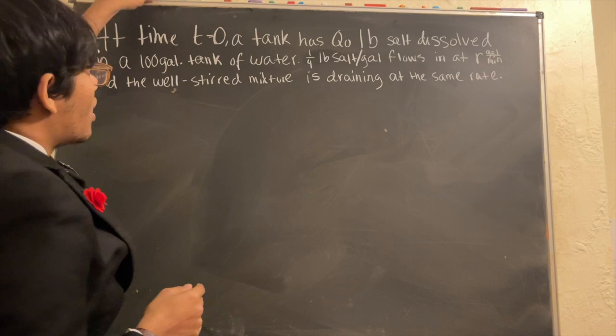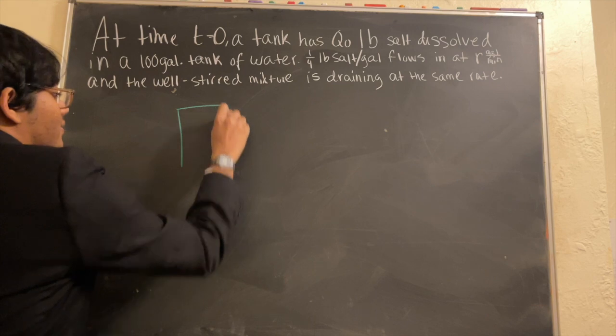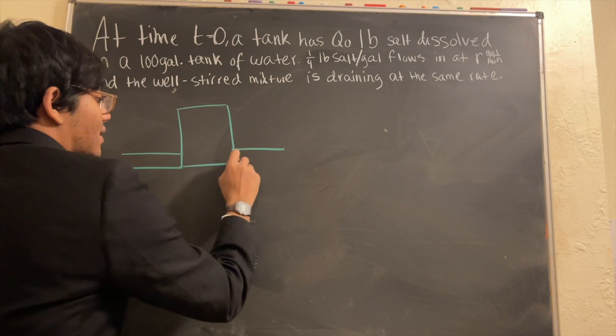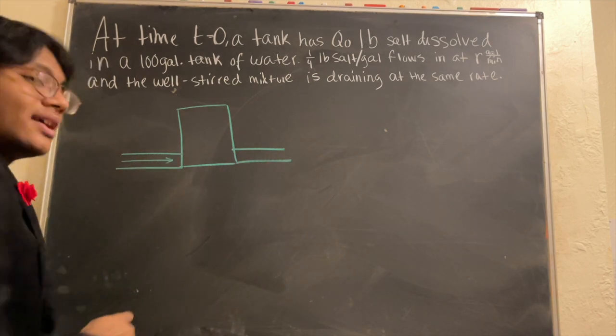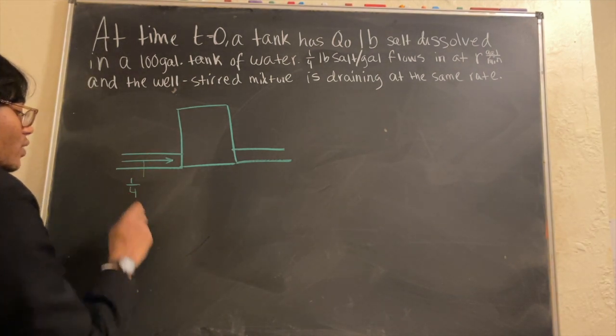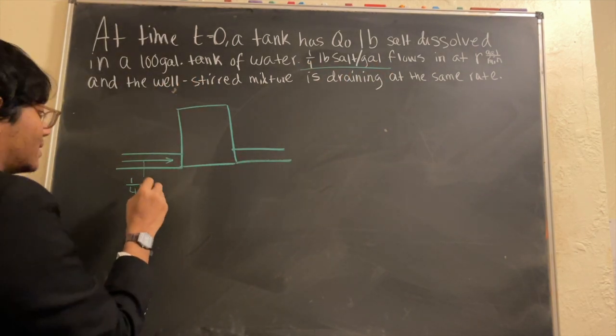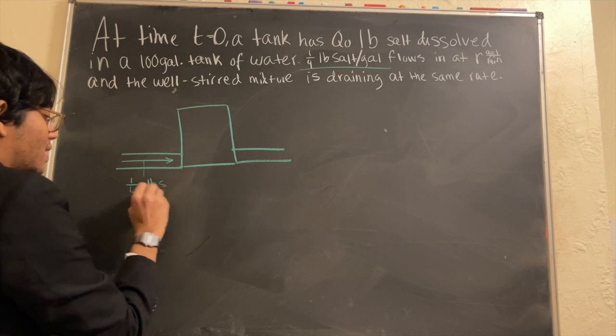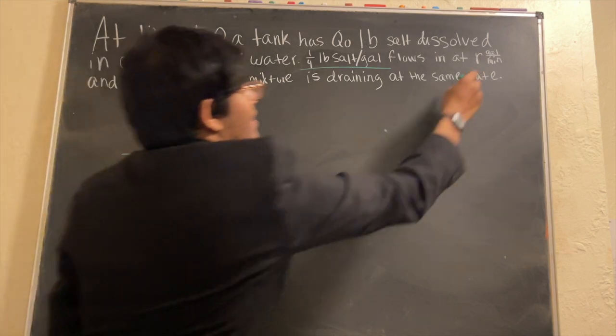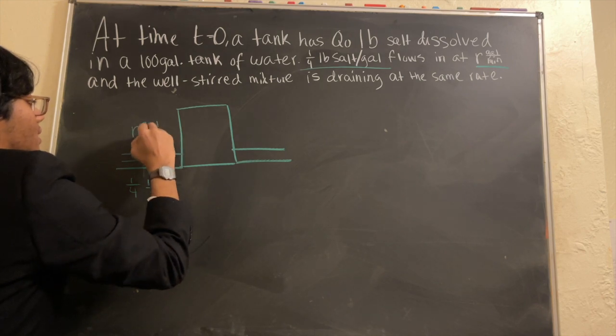First thing you want to do is draw a picture and that's what I'm going to start with. So here is our water tank, for instance. It's got some stuff coming in, some stuff going out. The stuff coming in is that salt, right? That salt with a concentration of one-fourth pounds of salt per gallon. So I'm going to write pounds per gallon. And the rate, the speed at which this is coming in is r gallons per minute. That's the rate, r gallons per minute.